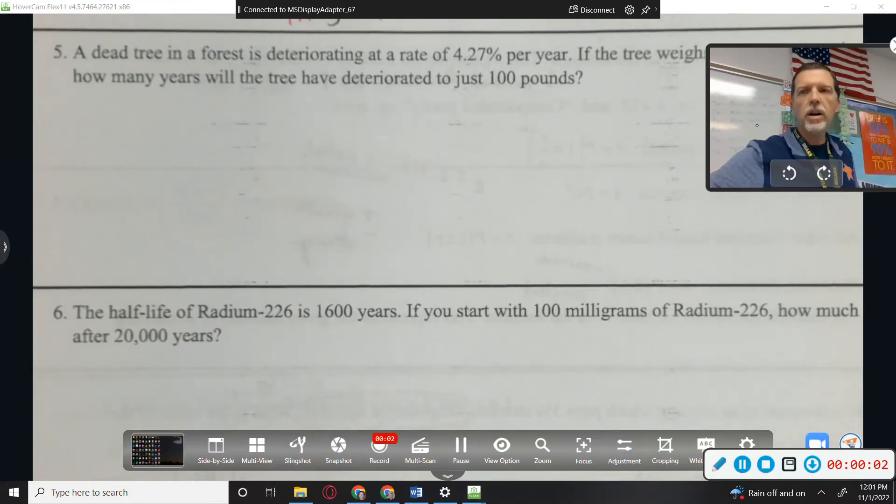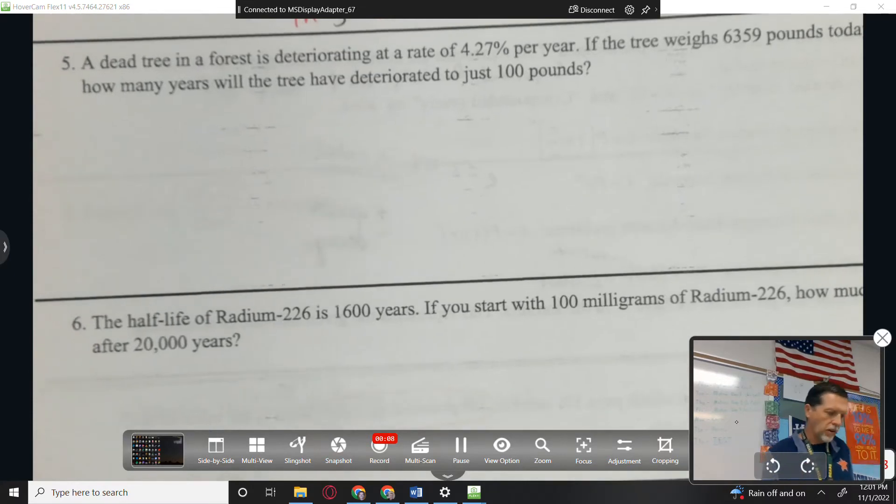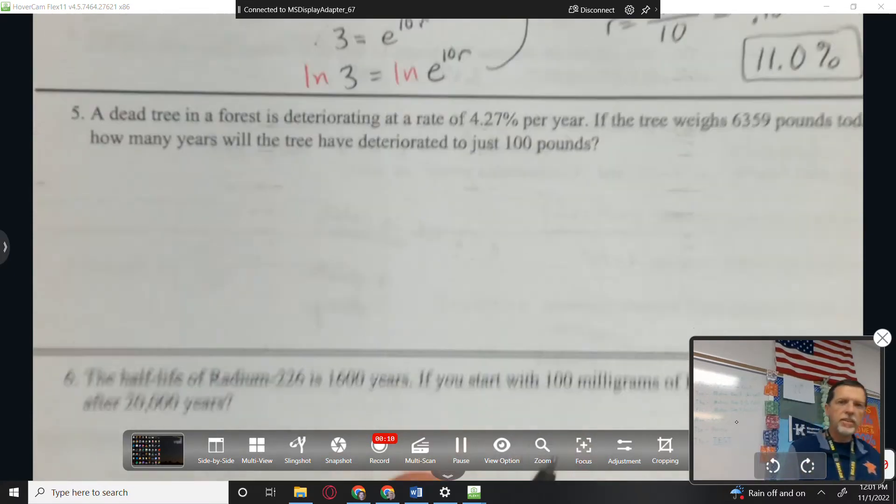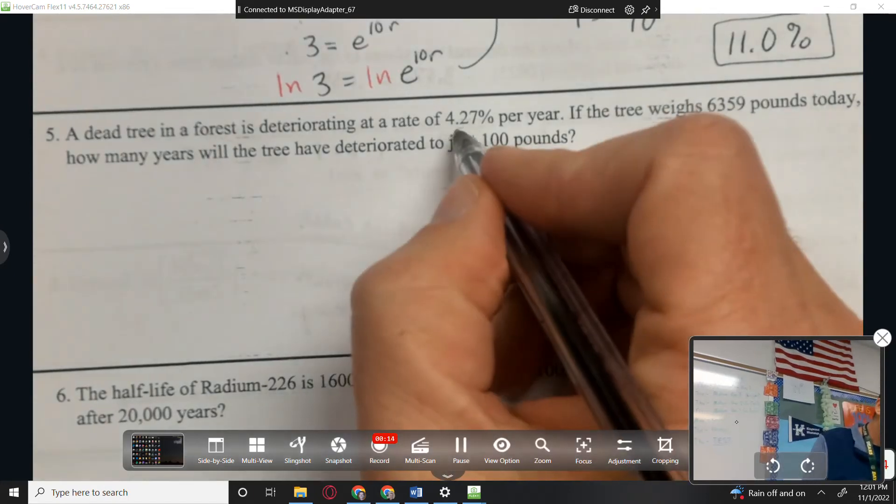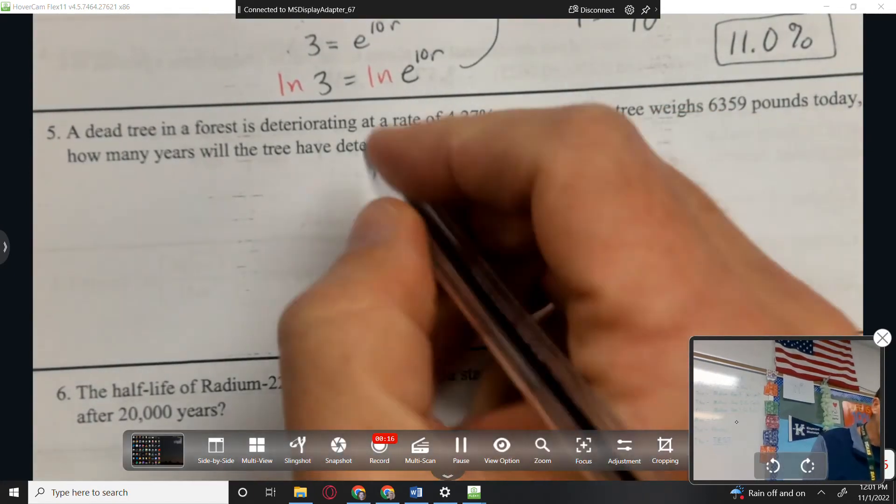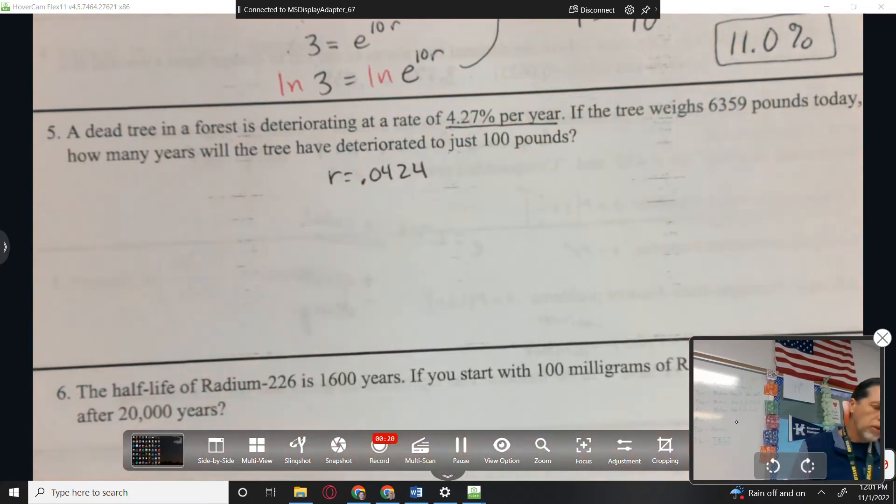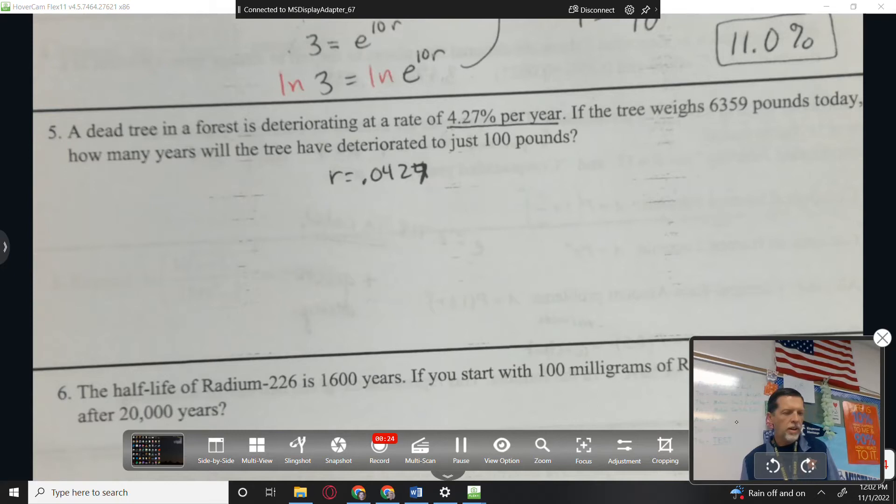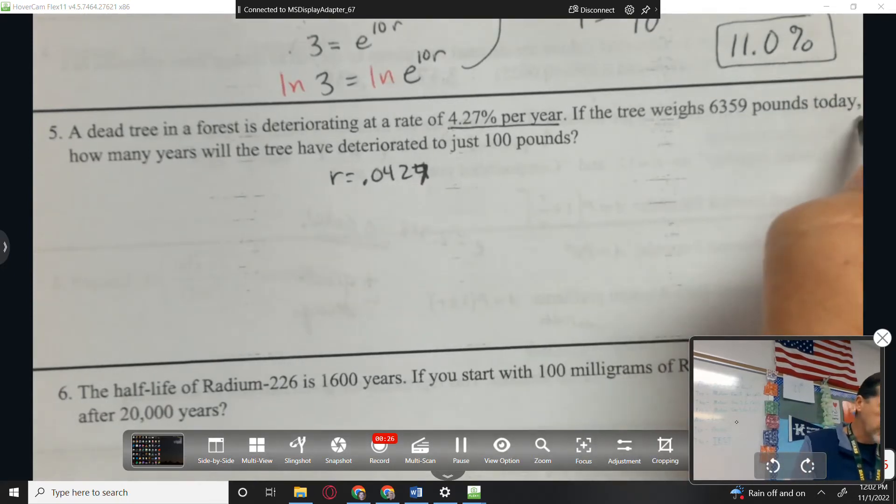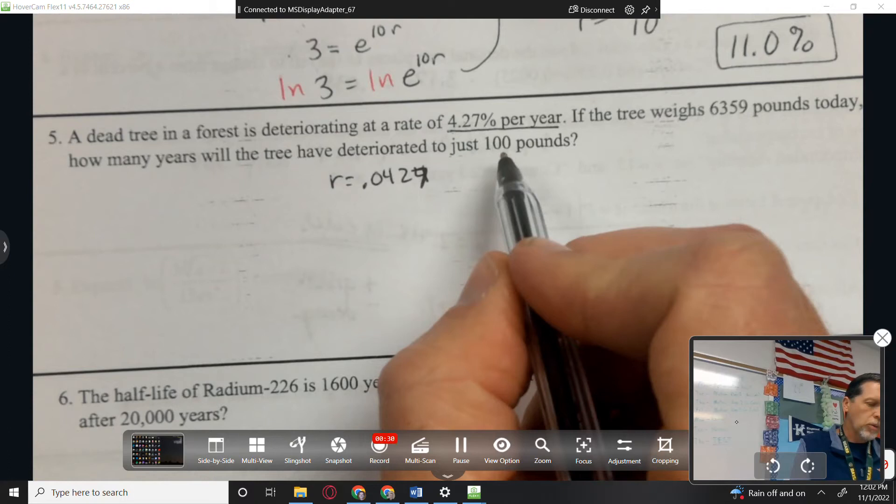Alright, part two of word problems. We'll do the last three examples here. Number five, a dead tree in a forest is deteriorating at a rate of 4.27%. Almost did the switch on the fly there. 0.0427 would be R. If the tree weighs 6359 pounds today, in how many years will the tree have deteriorated to just 100 pounds?